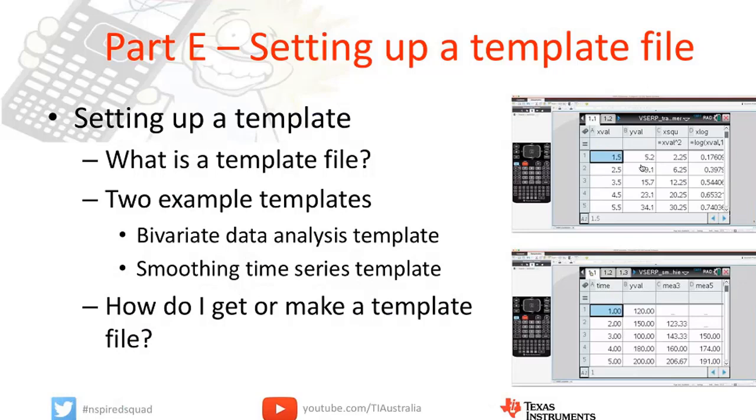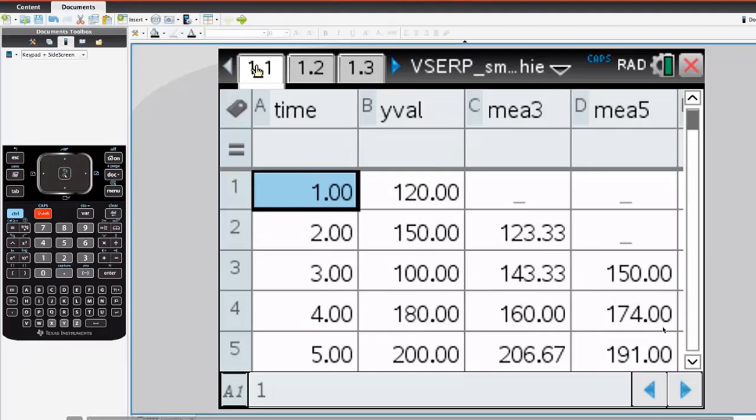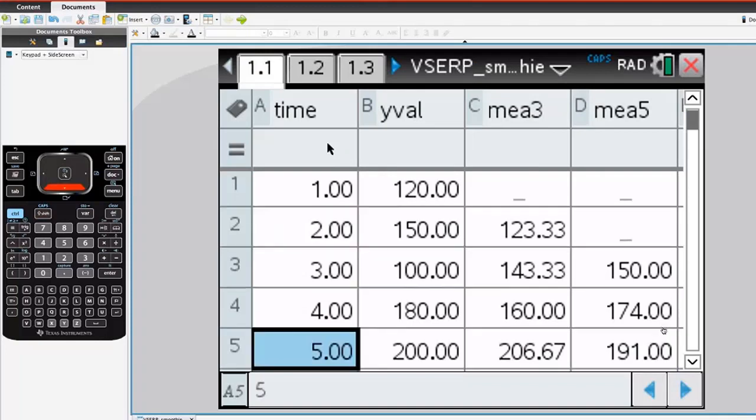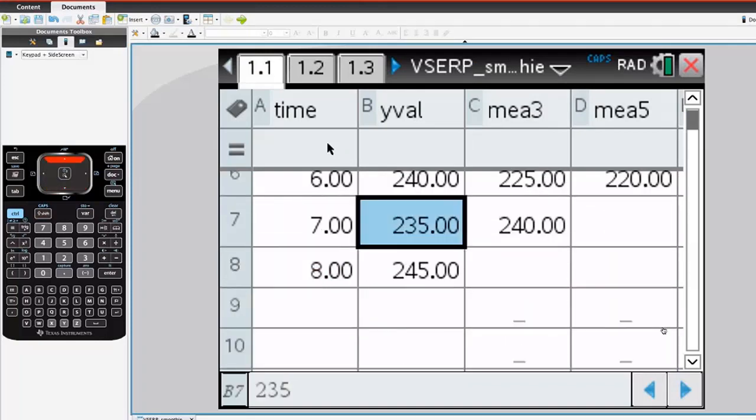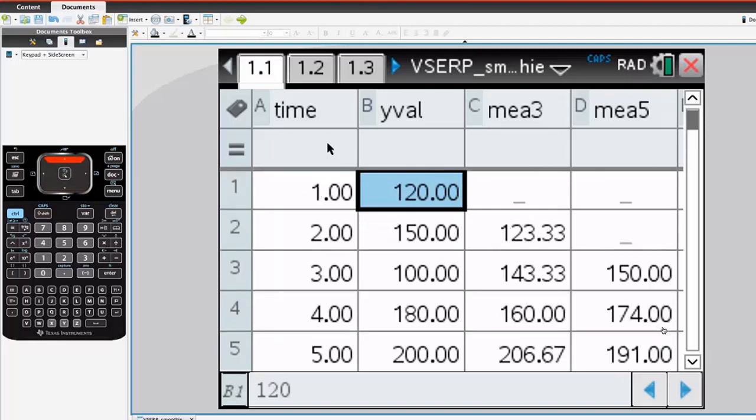The second one is related to time series. And again, it's a template. It's quite similar in style. So it's time period data. We've got time periods in the first column under the variable time. And this template allows you to put up to, I think, 20 data values or data pairs.